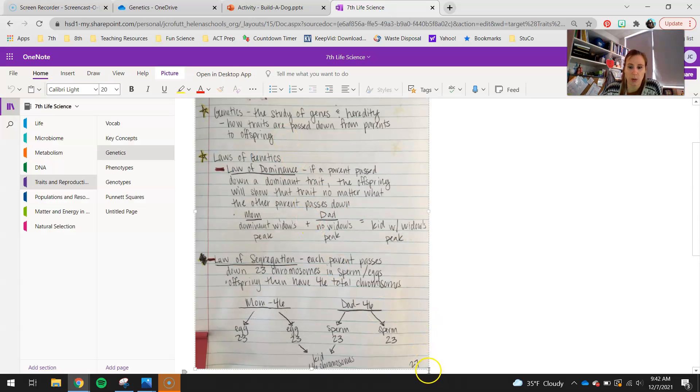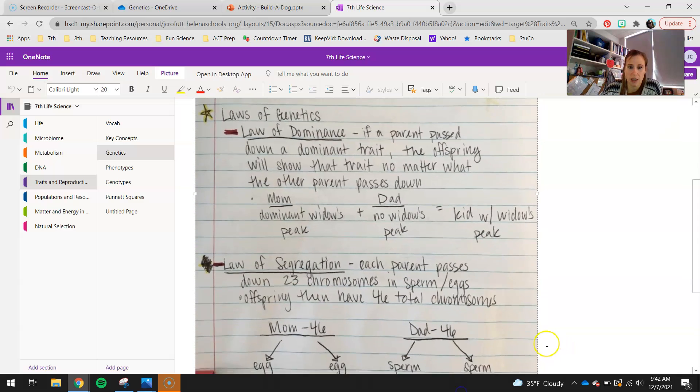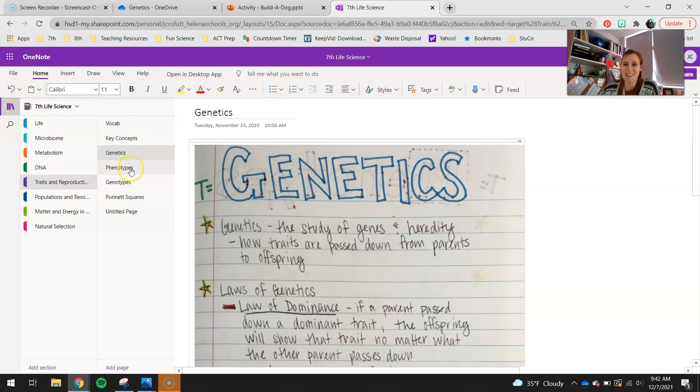I just want to go through these really quick with you guys and then your instructions will actually be on a little bit different video. So, this is genetics. This is kind of the basis. With genetics, we obviously call this unit Traits and Reproduction, but genetics is really the essence of this unit. Genetics is the study of genes and how those are passed down from parent to offspring throughout different generations. So, we call that heredity. The study of genes and heredity, which is how traits are passed down from parents to offspring.